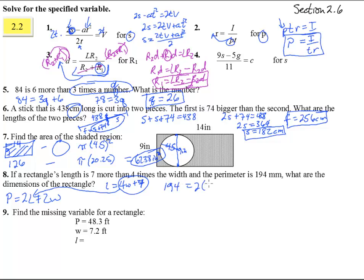So if we solve this out, we get 194 equals 8W plus 14 plus 2W. 194 equals 10W plus 14. Subtract 14 from both sides and we get 10W equals 180. So that means that the width is 18 millimeters.